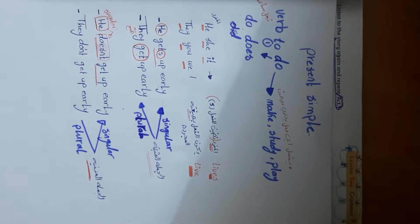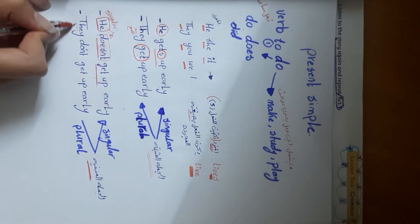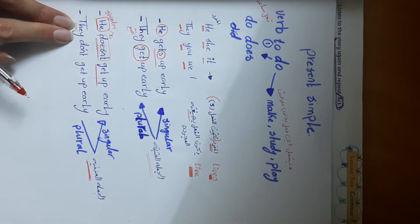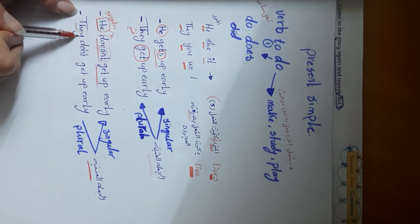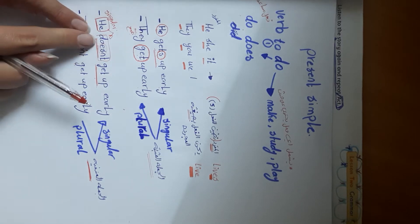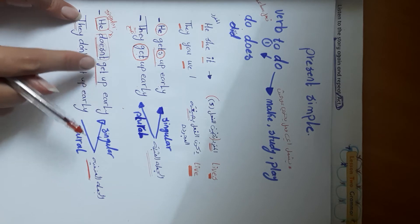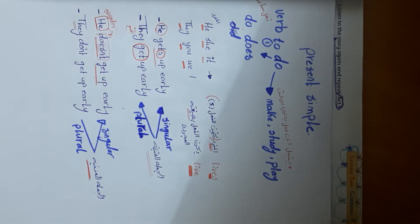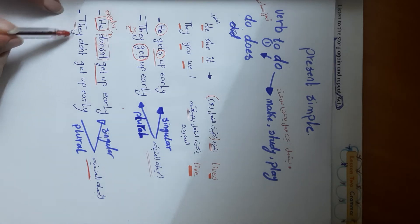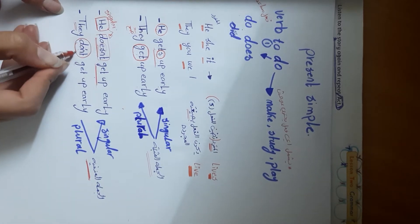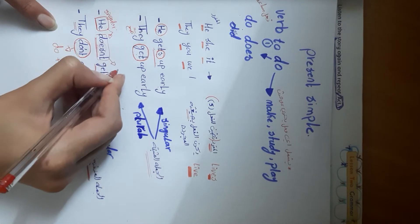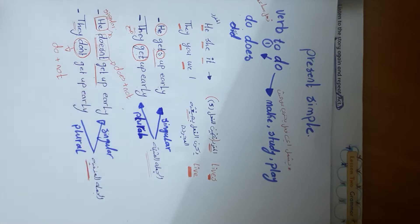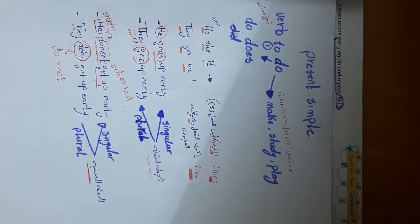For the plural 'they,' we use 'do' as the auxiliary verb, because it is plural — so 'they don't get up early.' 'Don't' is 'do + not,' and 'doesn't' is 'does + not.' Because we used 'doesn't' for the singular, the -es is removed from the main verb.